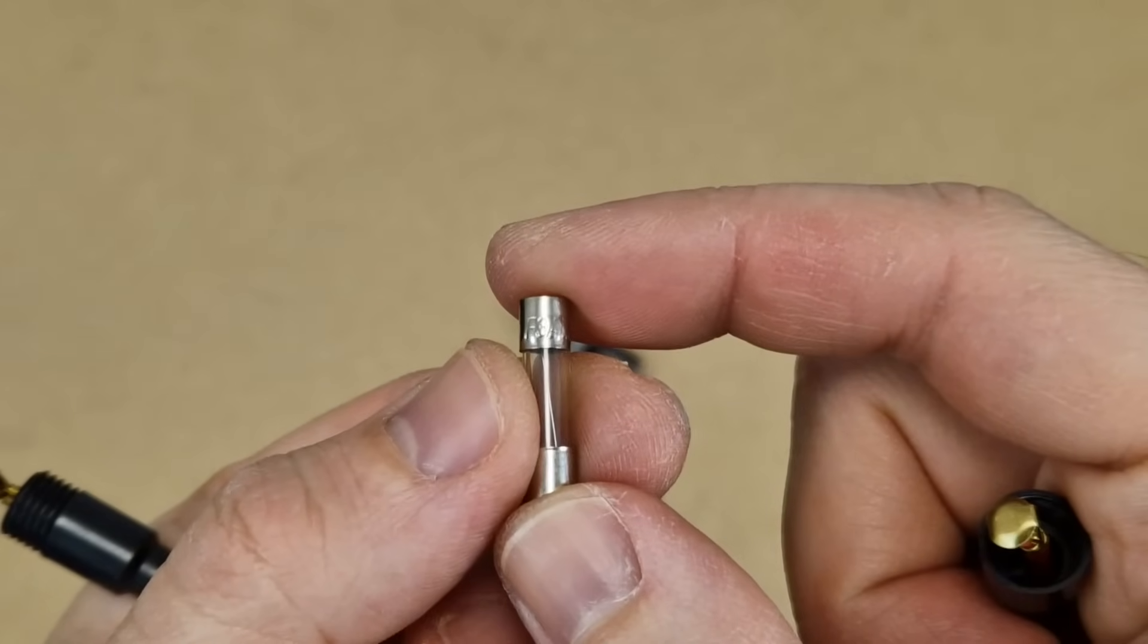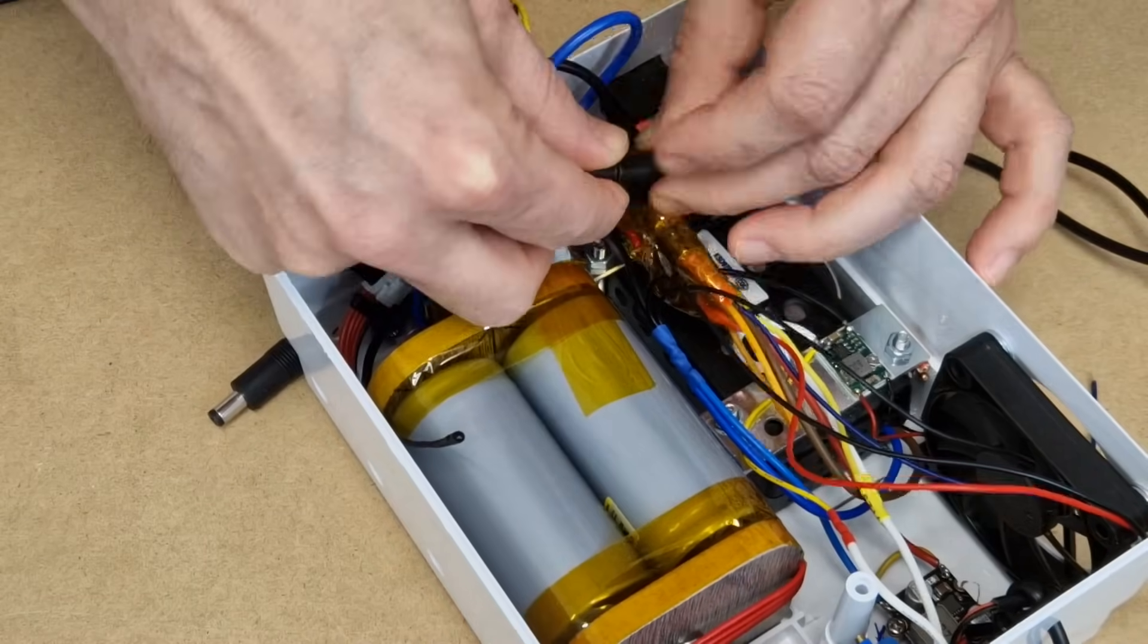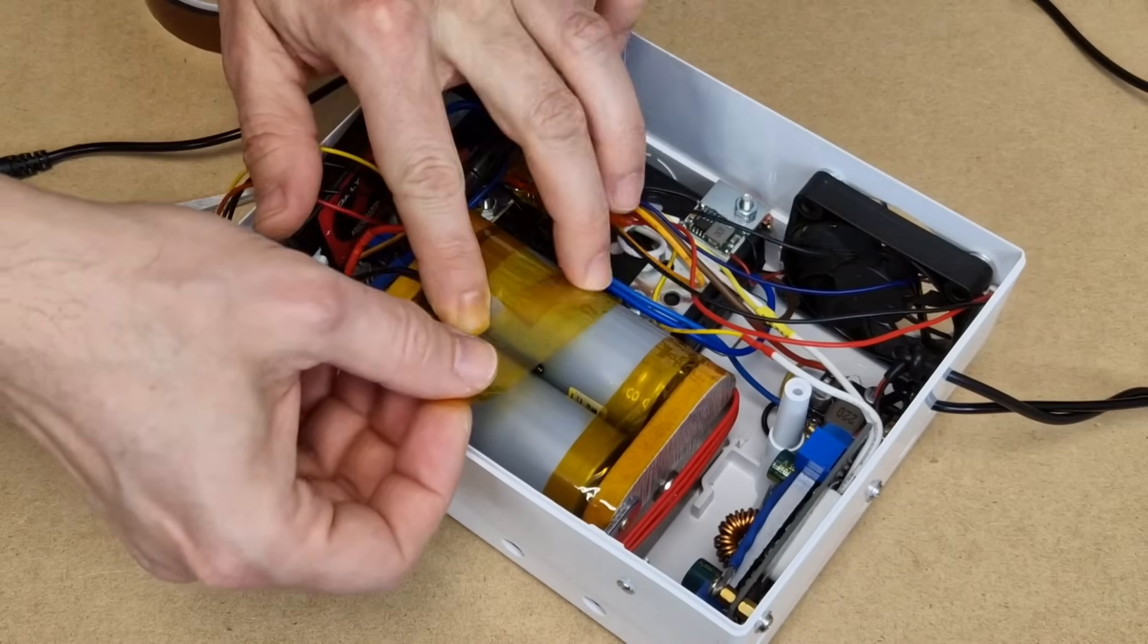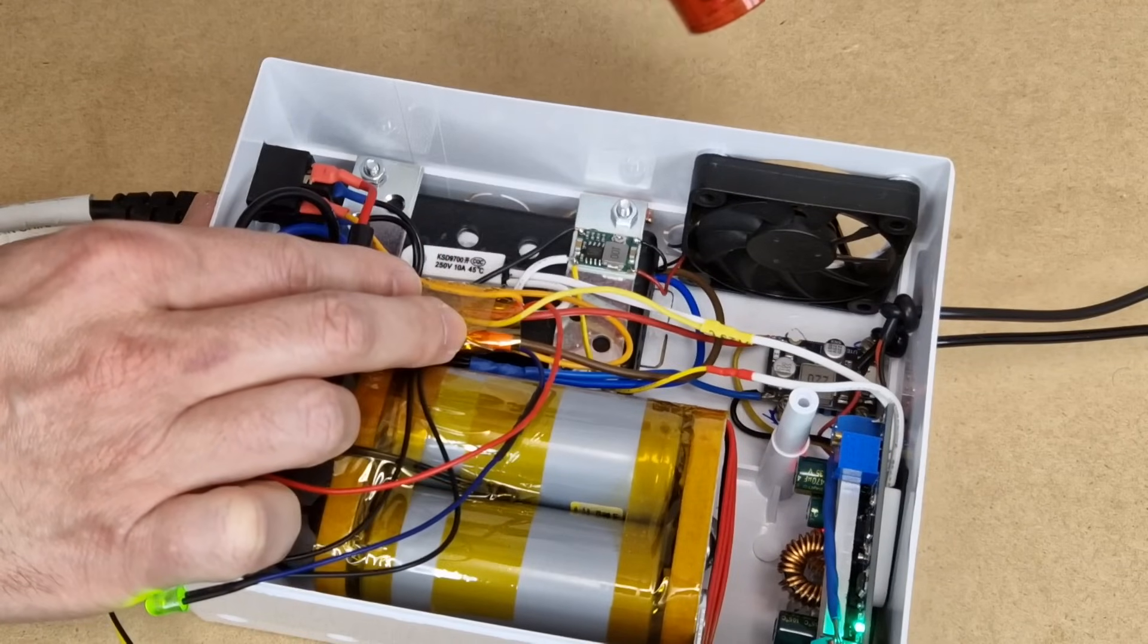I will use a 3 amp fuse. Depending on your load, you can use a lower or a higher current fuse. The battery temperature probe will be fixed between the cells with Kapton tape. The battery and power supply are connected.